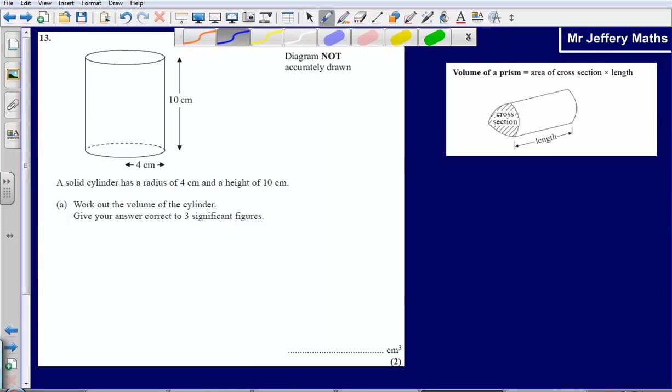This is question 13 from the 2008 calculator paper. We're told that a solid cylinder has a radius of 4 cm and a height of 10 cm. Work out the volume of the cylinder, giving your answer correct to three significant figures.